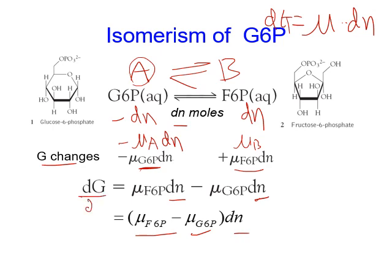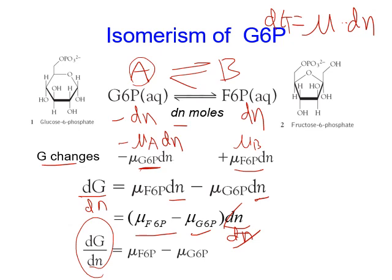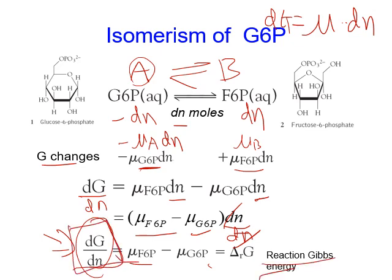If we divide by dN on both sides, we get dG/dN — which is the slope on the plot of Gibbs energy over composition at any instant. This equals the chemical potential of the product minus the chemical potential of the reactants at that instant. This slope has a special name: we call it the reaction Gibbs energy, which refers to the slope at any instant of the Gibbs energy over composition.